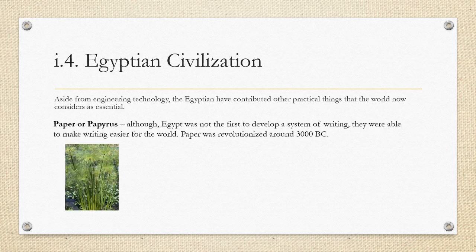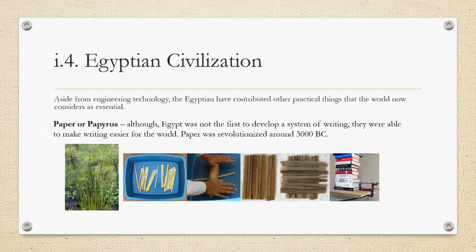This is the papyrus plant. To make papyrus paper, they cut the plants, removed the green outer layer, used the middle part, and squeezed out the watery or jelly-like substance. The strips were then arranged in a cross pattern to form sheets.